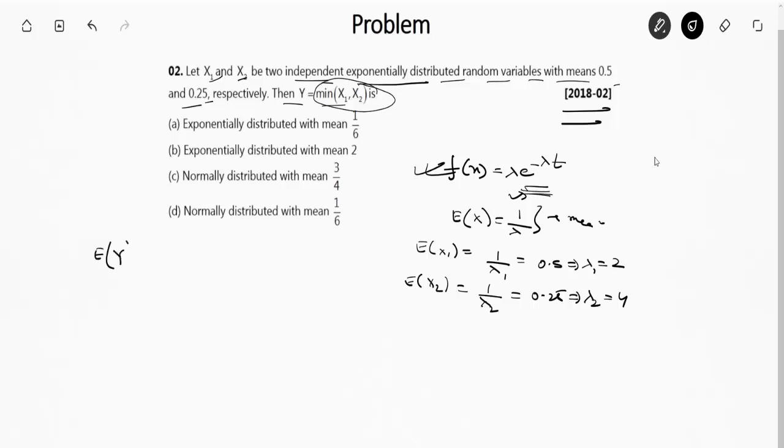For this, the mean will be 1/(λ1 + λ2), which is 1/(2 + 4) = 1/6. So it will be an exponentially distributed function with mean 1/6. The right answer is option A.